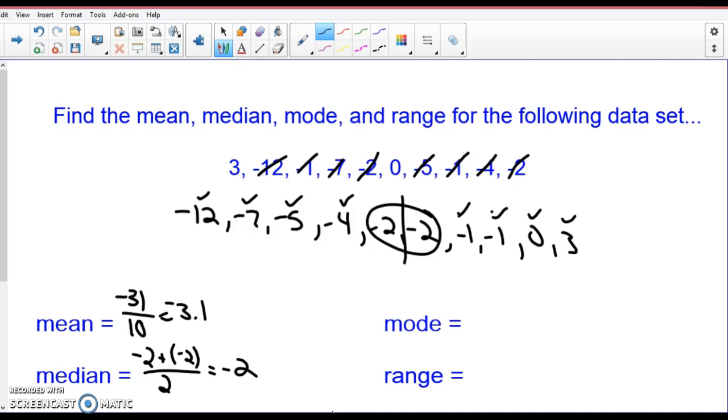Mode. What number appears the most on that list? Negative 2. Now, if all of the numbers only appear once, we say there is no mode. But any number that appears more than once, that is a potential mode. It's the one that appears the most.